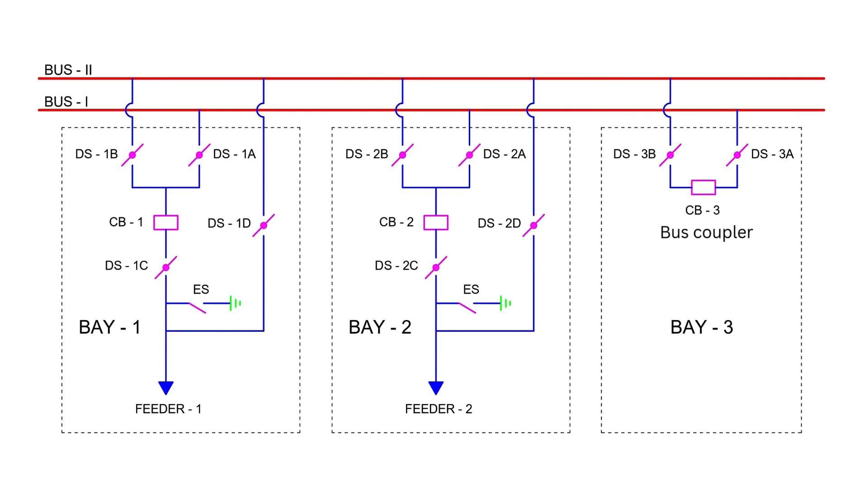Let's break down the components of the double bus single breaker scheme. Main isolators are connected to bus 1 and bus 2. Examples include DS1A, DS1B, DS2A, and DS2B. Load isolators are connected to the load end, such as DS1C and DS2C. Transfer isolators, like DS1D and DS2D, connect the load directly to the transfer bus. Earth switch is connected on the load side of the load isolator, providing safety during maintenance.